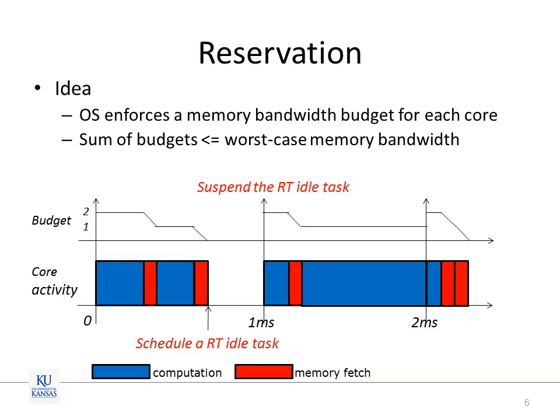MemGuard allows each core to reserve a fraction of memory bandwidth. It works periodically, and in each period, each core is given a specific amount of memory bandwidth budget that can be consumed within the period. Once the budget of a core is exhausted, the core's performance counter generates an interrupt to stall the core until the next period begins. As long as the sum of the reserved memory bandwidth is less than the worst-case memory bandwidth of the system, the reserved bandwidth of the cores can be guaranteed.